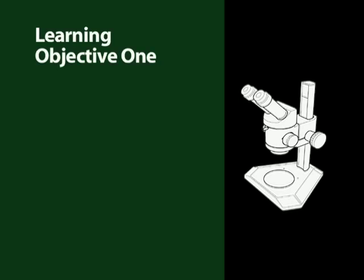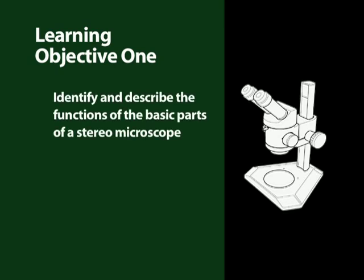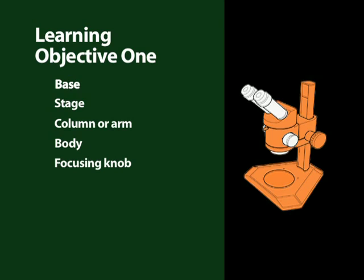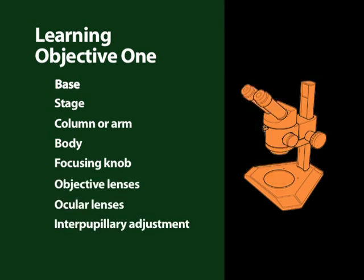We have now come to the end of the first part of this video. The learning objective of this section was to identify and describe the functions of the basic parts of a stereo microscope. This included the base, stage, column or arm, body, focusing knob, objective lenses, ocular lenses, interpupillary adjustment, and diopter adjustment. We also looked at reflected and transmitted light.